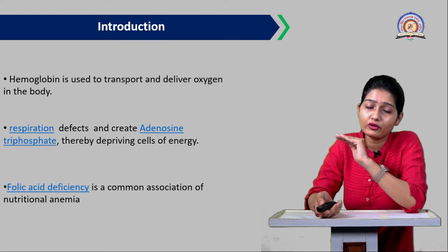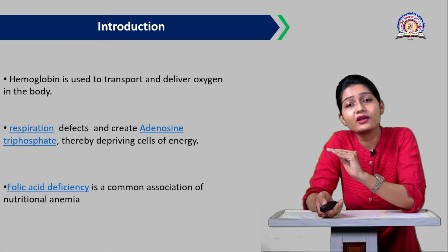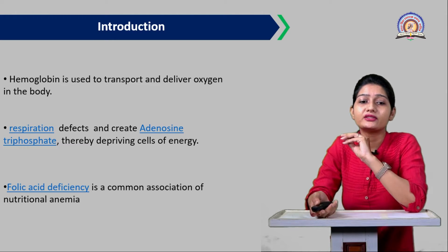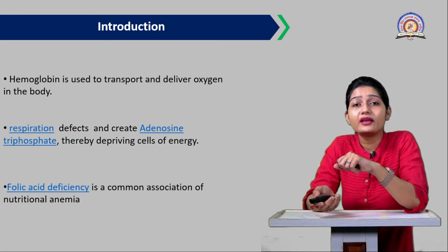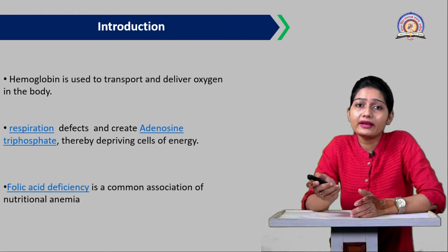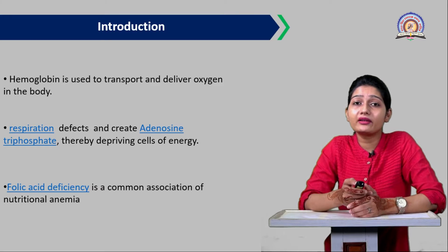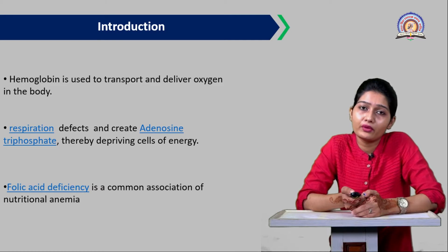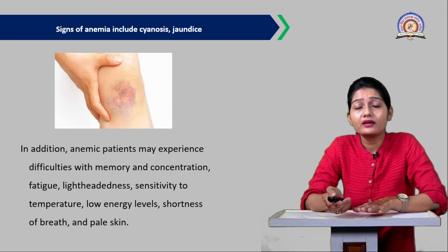If hemoglobin level decreases below the WHO standard thresholds, this will cause respiration defects, because oxygen is required for respiration and is carried by hemoglobin. Decreased hemoglobin reduces adenosine triphosphate production, thereby depriving cells of energy. Additionally, folic acid is a common association with nutritional anemia — if folic acid levels also decrease, that will lead to nutritional anemia. Folic acid is especially important for pregnant women for the normal development of their baby.